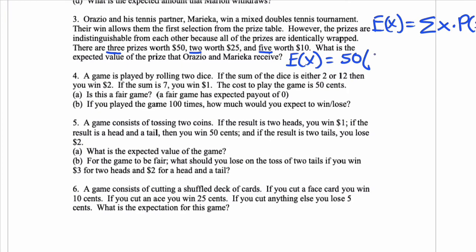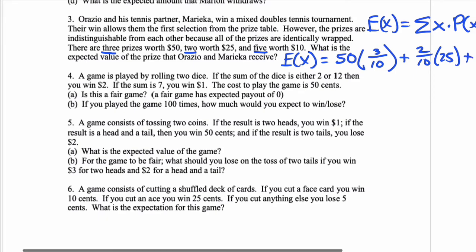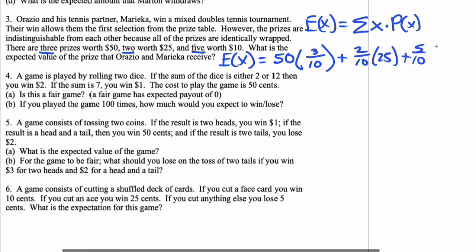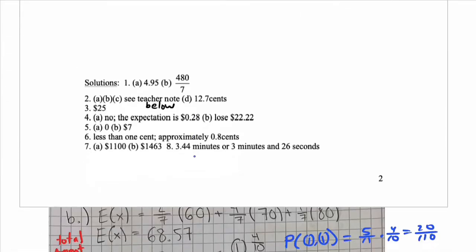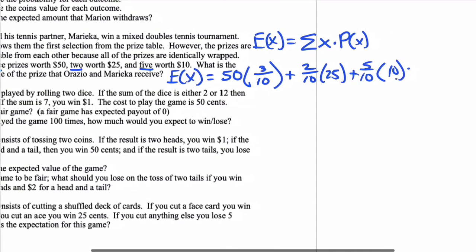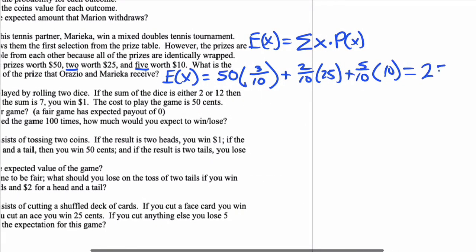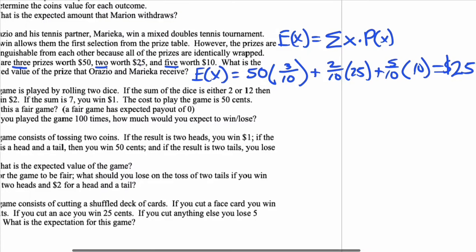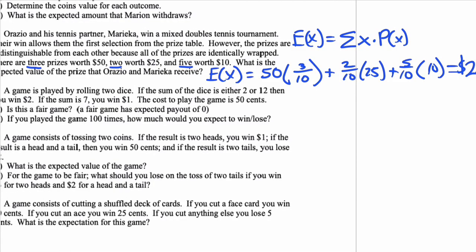So $50, and the probability is three. There's three prizes, and the total number of prizes is ten. So you do 50 times 3 tenths, plus there's two of these prizes, so that's 2 tenths times 25. The last one is five prizes, 5 tenths times 10, and if you add that all up, you should get $25. So that equals $25. So that's the average amount of money you would win if you pick these prizes at random.